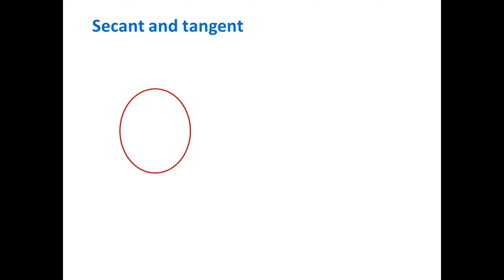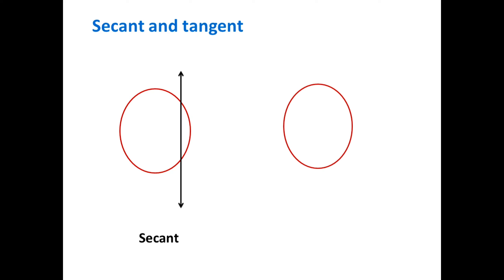Let's revise to distinguish between a secant and a tangent. If there is a circle and there is one line which intersects the circle in two distinct points, it's called a secant. And if there is a circle and a line which touches the circle at a single point, it's called a tangent.